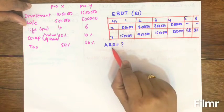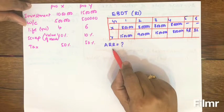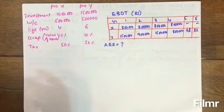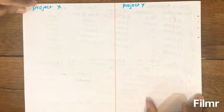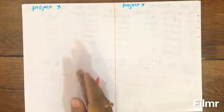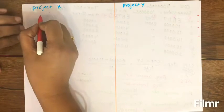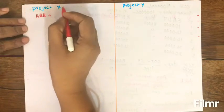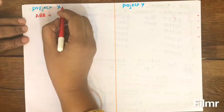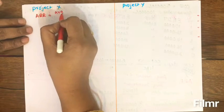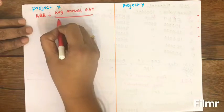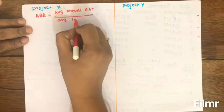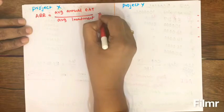Given this data, we are asked to find out ARR. The formula for ARR is: ARR = (Average Annual Earnings After Taxes / Average Investment) × 100.